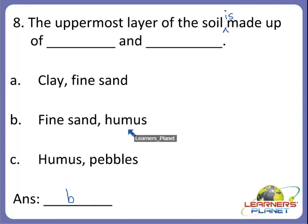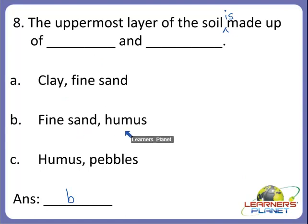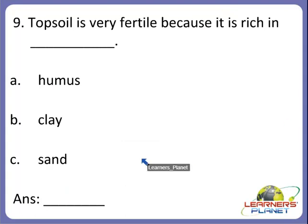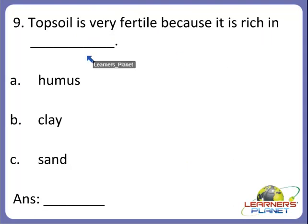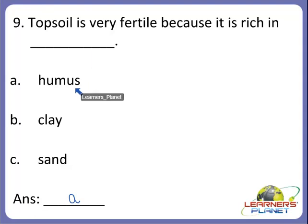And that is why this layer is called topsoil. It is made up of fine sand and humus, and that is why topsoil is very fertile. Now the next one: topsoil is very fertile because it is rich in dash. Is it A. humus, B. clay, or C. sand? Yes, it is A — that is humus. Topsoil is very fertile because it is rich in humus.